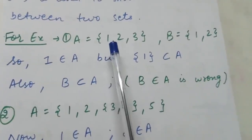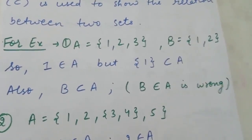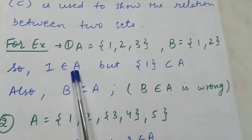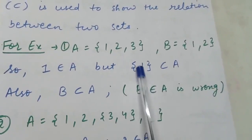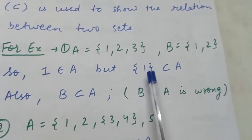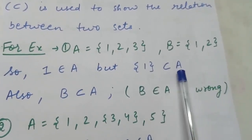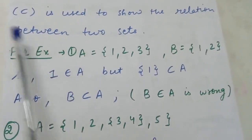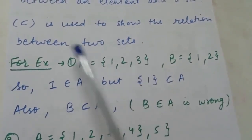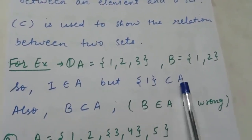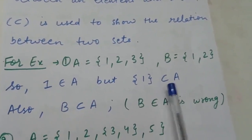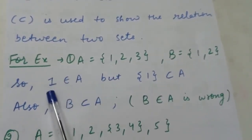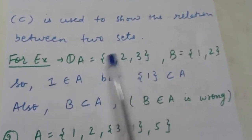For example, if A = {1, 2, 3} and B = {1, 2}: the element 1 belongs to A, so we write 1 ∈ A. But {1} in curly brackets is a set, and to show the relation between two sets we use the subset symbol. So {1} ⊆ A. Writing B ∈ A is wrong because B and A are two sets; to show the relation between two sets we always use ⊆.